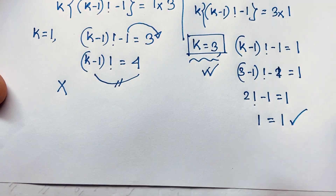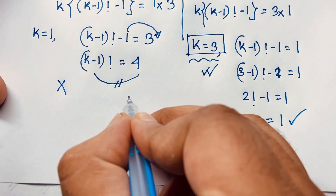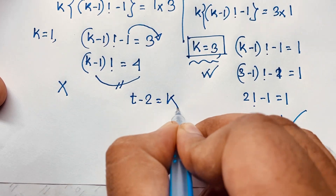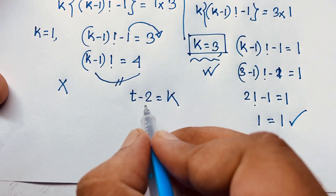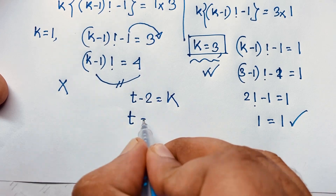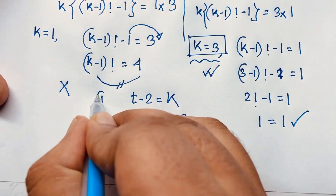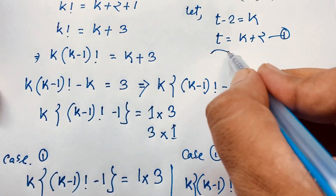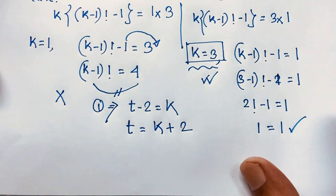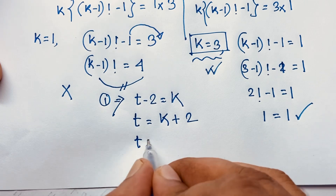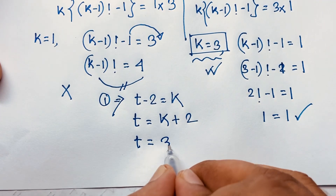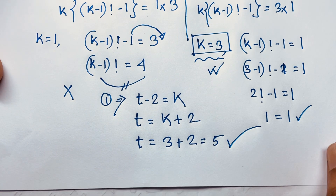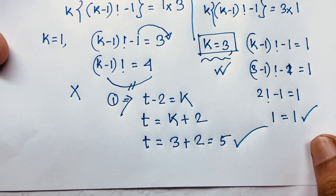Recall that we let t minus 2 equal k, so t equals k plus 2. Now that we found k = 3, we get t = 3 + 2 = 5. So our final answer is t = 5.